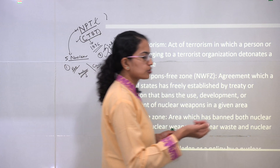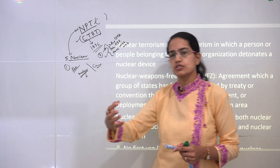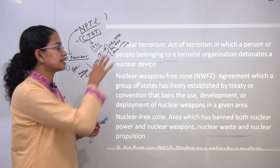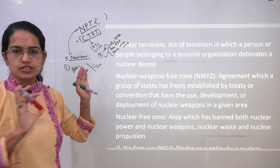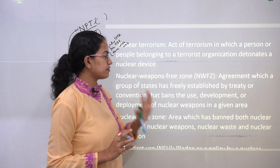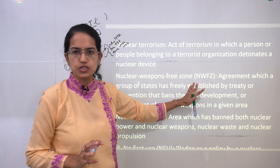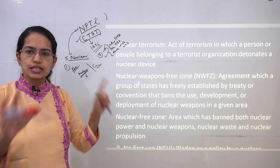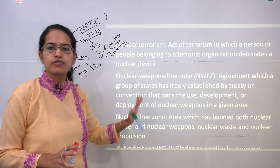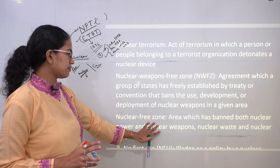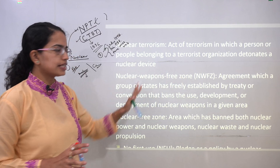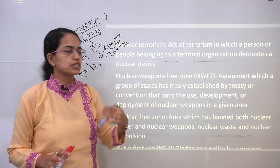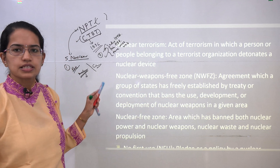Nuclear terrorism refers to the use of nuclear technology by a terrorist group or organization; if misused it is called an act of nuclear terrorism, which so far has not happened. Two more important terms: nuclear weapons free zone is an agreement released by the United Nations that bans the use and development of nuclear weapons in a given area, whereas nuclear free zone is a broader term referring to an area banned from nuclear power, nuclear weapons, and nuclear waste.